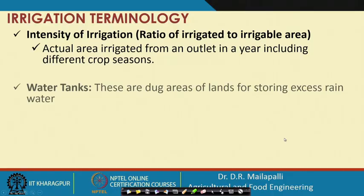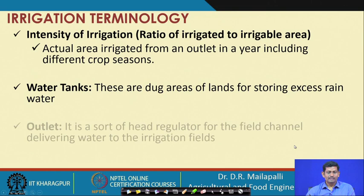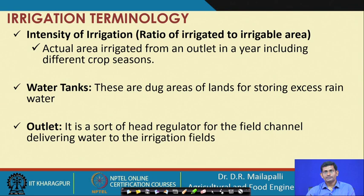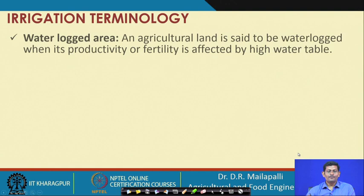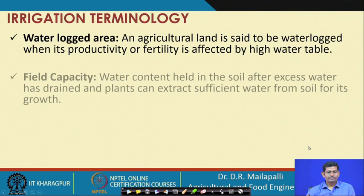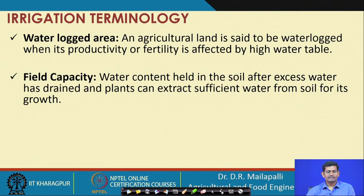Water tanks are dug areas used to store excess rainwater. Outlets are head regulators at the field level to deliver water to the fields. A waterlogged area is agricultural land where the productivity or fertility is affected by a high water table — the water table rises and water is always visible on the surface. Field capacity is the water content held in the soil after excess water has drained away and plants can extract sufficient water for growth.